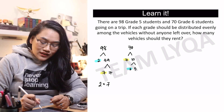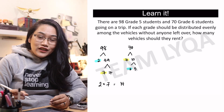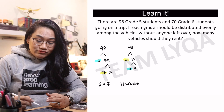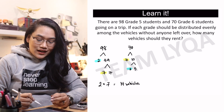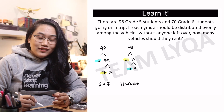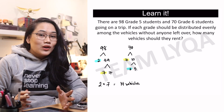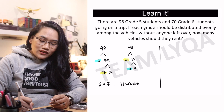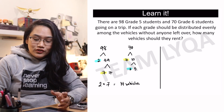2 times 7 is 14. Which means they could rent 14 vehicles — naglalaman ng tigpipito na grade 5 students at tiglilima na grade 6 students. Walang matitira, walang maiiwanan.